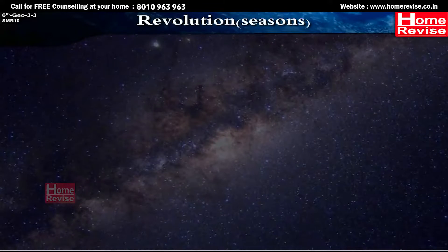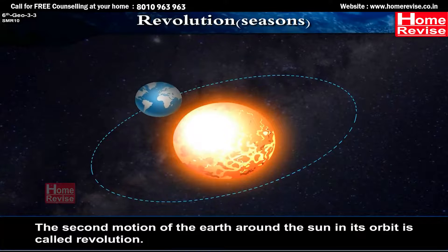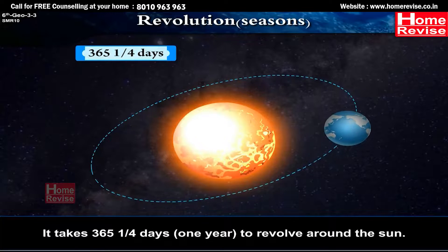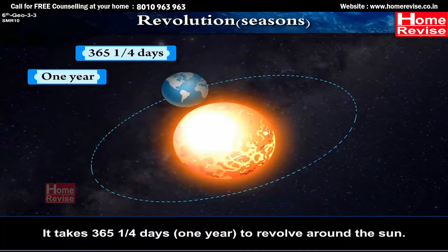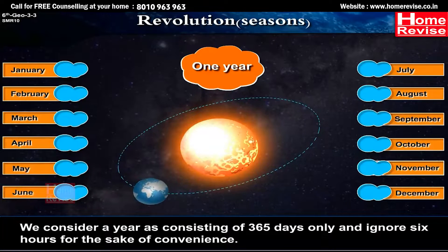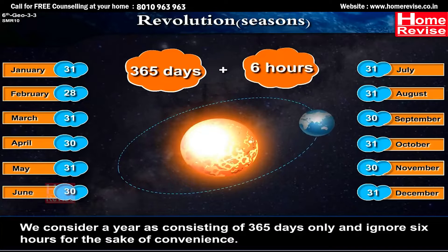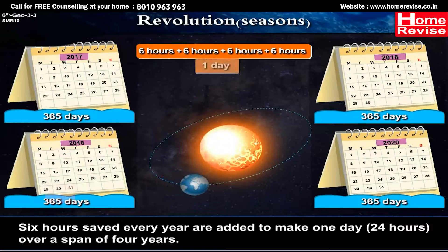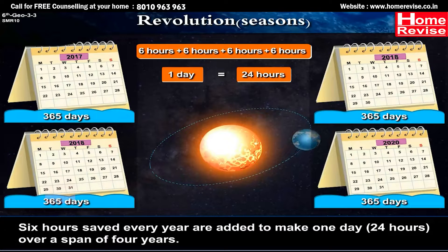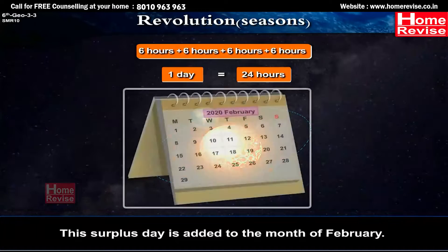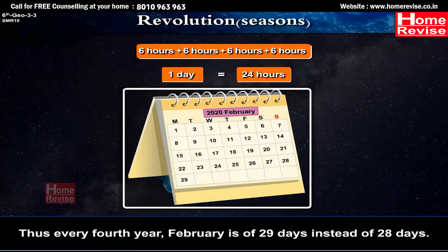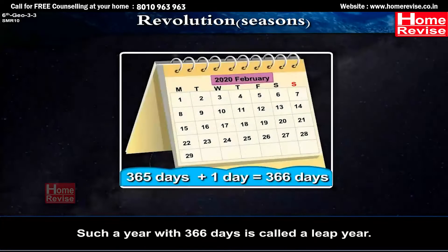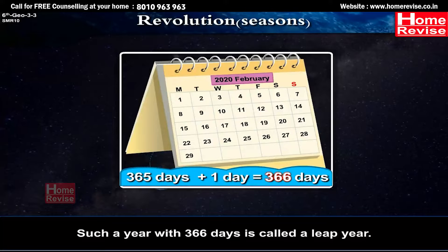The second motion of the Earth around the Sun in its orbit is called Revolution. It takes 365 and a quarter days — that is one year — to revolve around the Sun. We consider a year as consisting of 365 days and ignore 6 hours for convenience. The 6 hours saved every year are added to make 1 day over a span of 4 years. This surplus day is added to the month of February, so every 4th year, February has 29 days instead of 28 days. Such a year with 366 days is called a leap year.